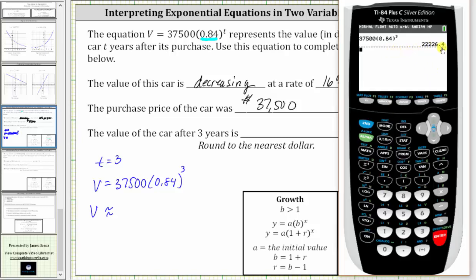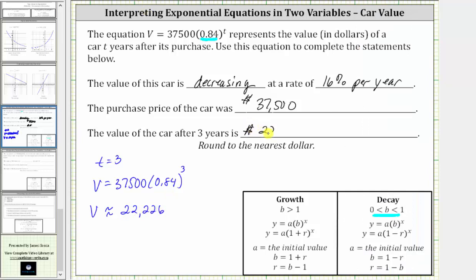And because we have a four in the tenths place value, we round down. The value is approximately $22,226. I hope you found this helpful.